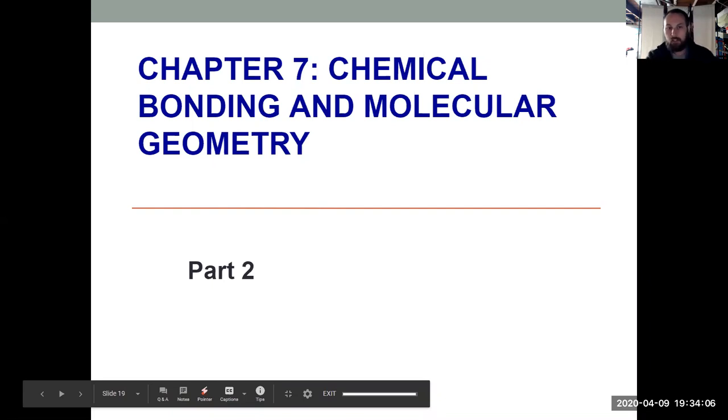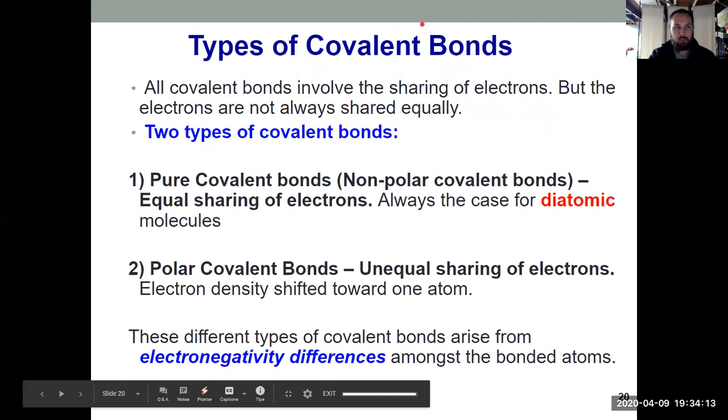I mentioned electronegativity before and we need that idea to differentiate between the two types of covalent bonds. We've talked in the first video about the difference between a covalent and an ionic bond, and while we know that a covalent bond means electrons are being shared, we can break it down even further into two different types of covalent bond.